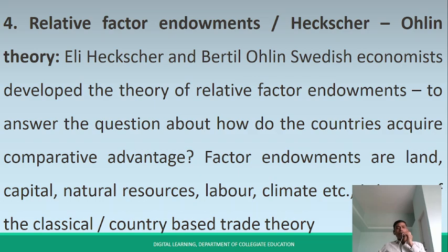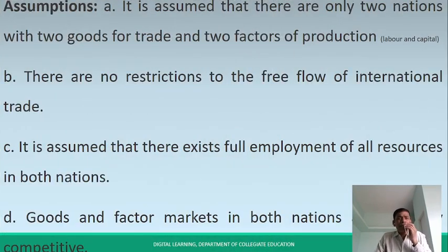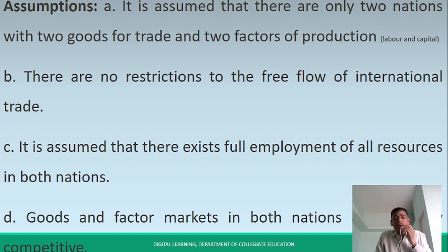This is also a classical or country-based trade theory. The assumption is that there are only two nations with two goods. The assumption covers two nations and two countries with two goods per trade and two factors of production. The two factors of production are labor and capital. There are no restrictions to the free flow of international trade, and both nations have full employment.